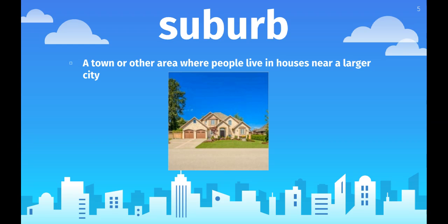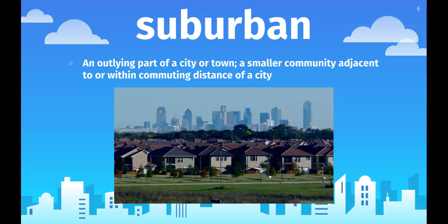Your next word is suburban — this is an outlying part of a city or town, a smaller community adjacent to or within commuting distance of a city. In this picture you can see the city in the background — that would be the urban area — and then you can see the outlying houses, which would be the suburban area.